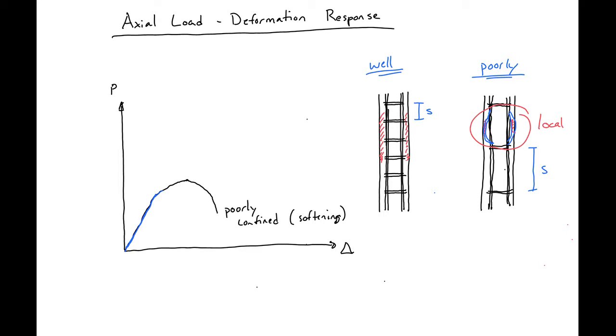So our cover will start to fail. And then this is when our stirrups are going to kick in. So our stirrups are going to provide confinement on our core. So we're going to confine our core, and when that happens, we're going to see a hardening response before we have some kind of global failure.